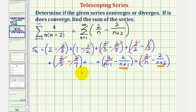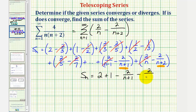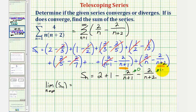The only two terms remaining are these last two fractions from the last two groups. So the simplified formula for the partial sum is S sub n equals two plus one, minus two divided by the quantity n plus one, minus two divided by the quantity n plus two. And now we'll take the limit as n approaches infinity. As n approaches infinity, the denominators increase without bound, and therefore these two fractions approach zero. Therefore, this limit equals two plus one, or three. And therefore the infinite series converges, and the sum is three.